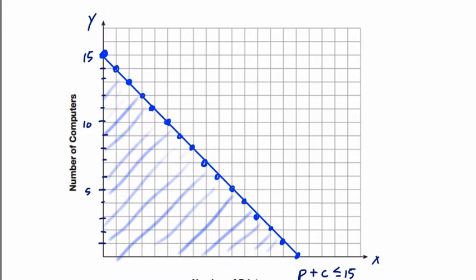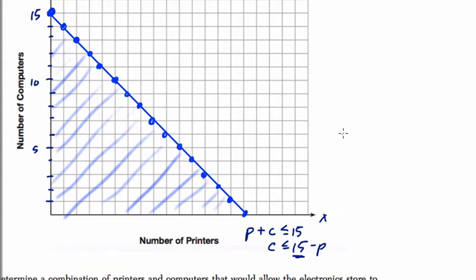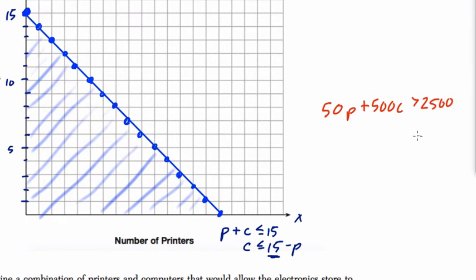And the other one that's set up as well. So the next equation, we've got 50p plus 500c is greater than 2500. So we divide everything by 50, and p plus 10c is greater than 50. That's the reduction by scale factor of 50. We'll isolate c again. So 10c is greater than 50 minus p. And divide by 10. So c is greater than 5 minus 1 tenth p.